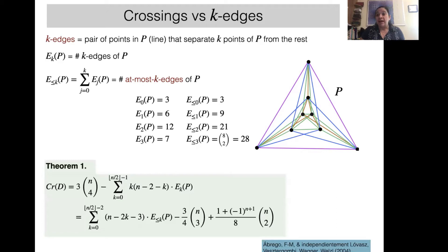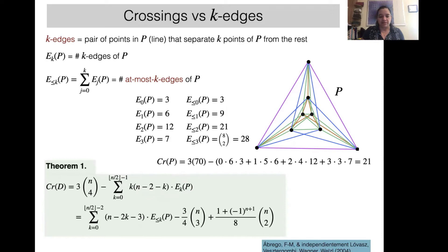The breakthrough theorem gives an identity which is surprisingly easy to understand: the total number of pairs of points minus the non-crossings — where for any k-edge we multiply the number of points on one side by the number on the other — essentially counts the crossings. For our particular example, counting all k-edges completely determines the 21 crossings.